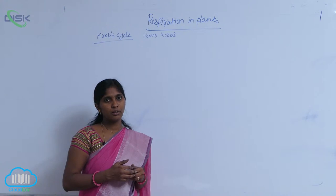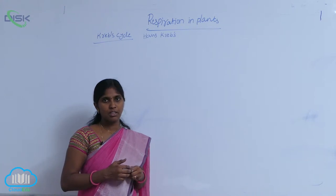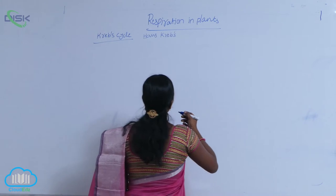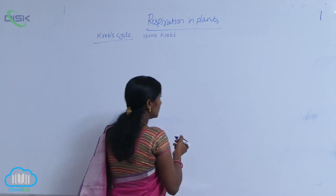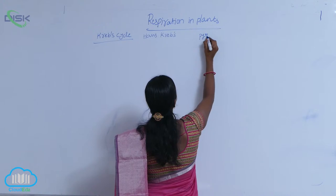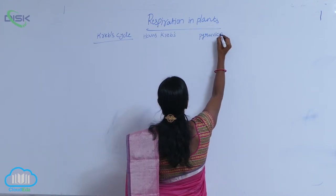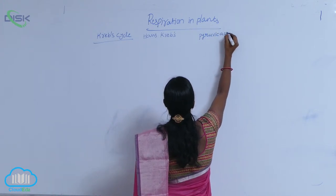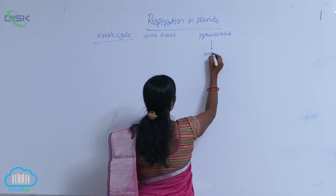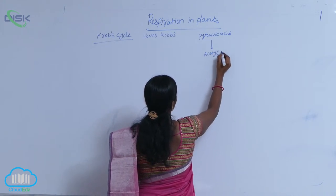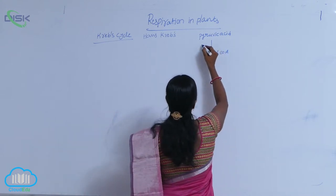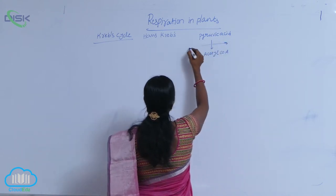What are the steps involved in the Krebs cycle? Coming to the Krebs cycle, I am writing here the intermediate reaction. From pyruvic acid — pyruvic acid to acetyl-CoA production. During this intermediate reaction, what are the compounds released here?